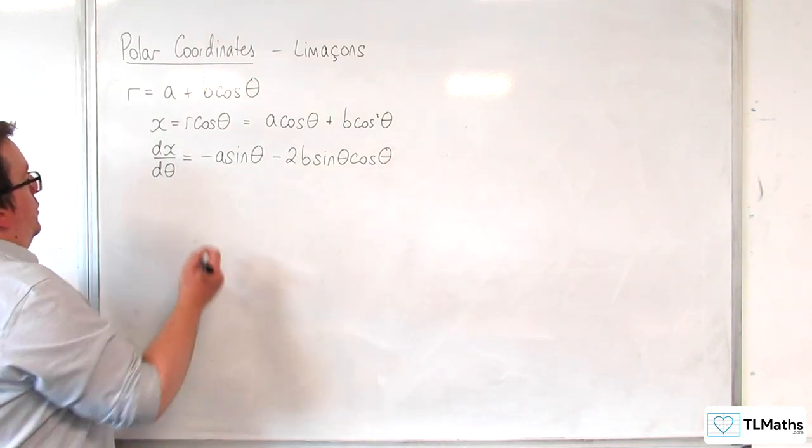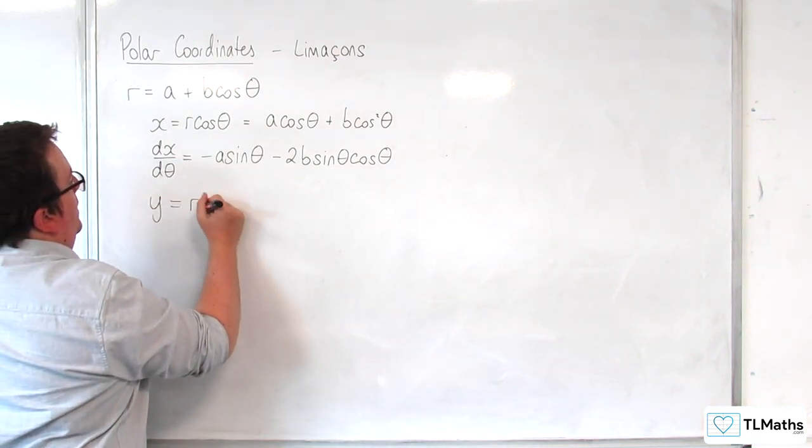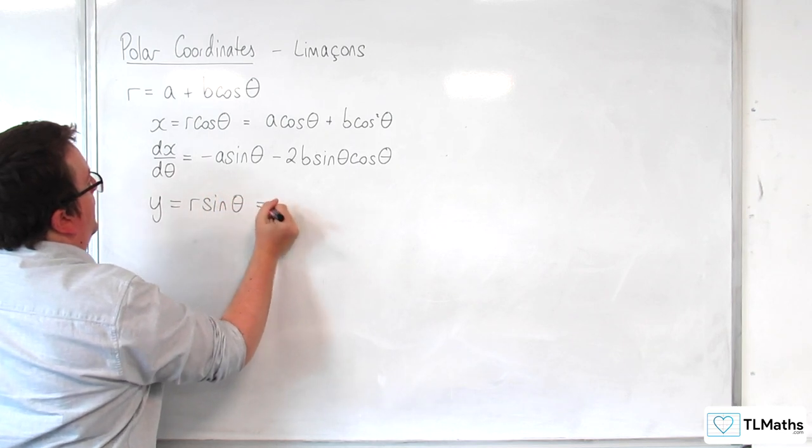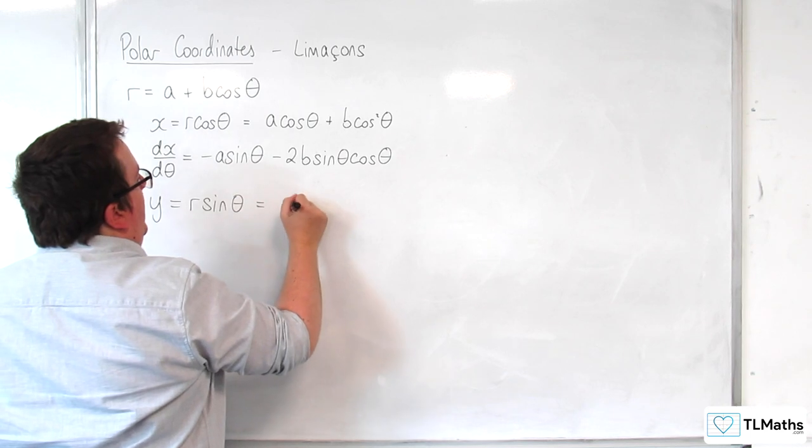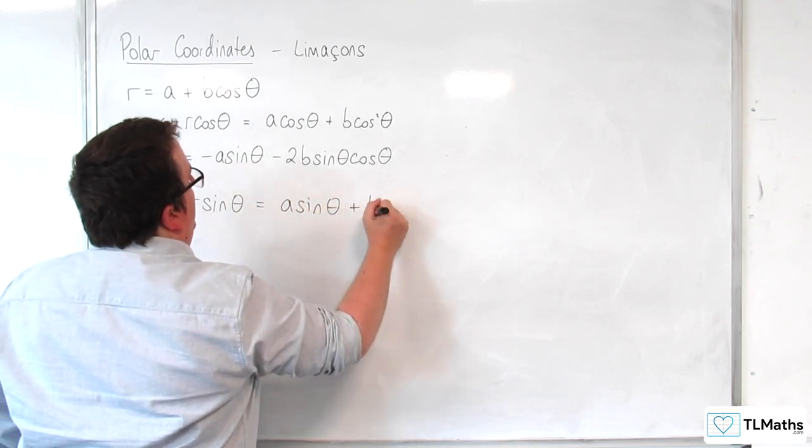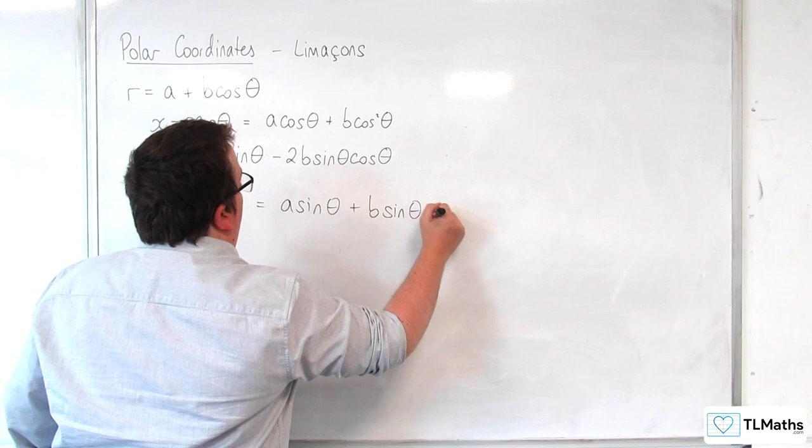Now, I can also say that y was equal to r sine theta. So, that would be r times sine theta, so a sine theta, plus b sine theta cosine theta.